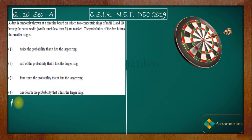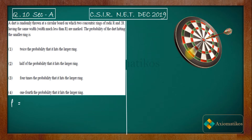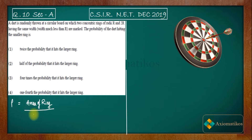Probability is given by favorable outcome over total outcome. In this problem, outcomes correspond to areas. The total outcome is the area of the entire circular board — since the dart can hit anywhere on it. The favorable outcome is the area of the smaller ring.